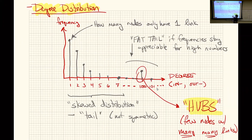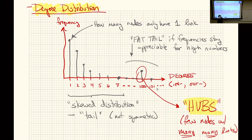Degree distributions are useful because if we think we know how a network forms, we can simulate that process, build a network, and compare its degree distribution to what we observe in nature. If they don't match, our formation process was probably wrong. So degree distributions serve as measurable, quantifiable metrics of whether a network model agrees with real data.